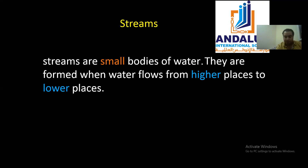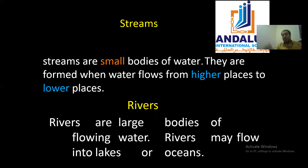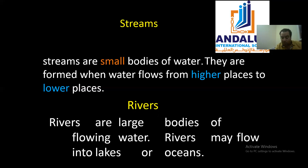Rivers — we're sorry that we don't have rivers here in Saudi Arabia, but in Egypt we have one and in Iraq we have two, and there are rivers around the world. Rivers are large bodies of flowing water. Streams and rivers may flow into a lake, an ocean, or a sea. For example, the River Nile drops its water into the Mediterranean Sea, which borders Egypt — not the Red Sea, which is between Egypt and Saudi Arabia.